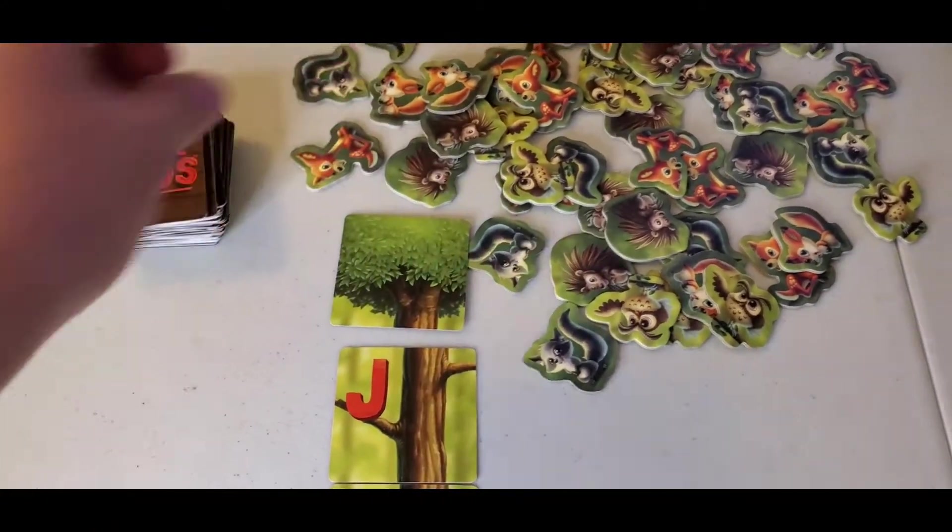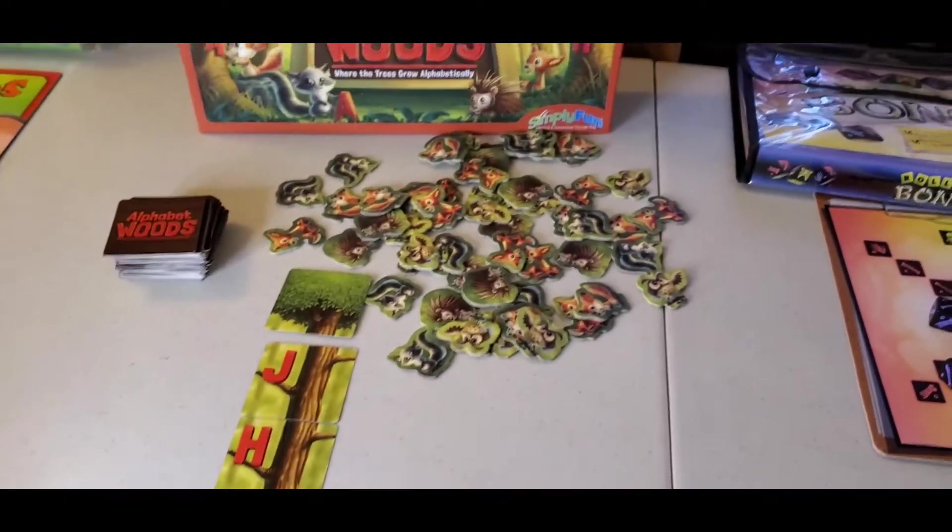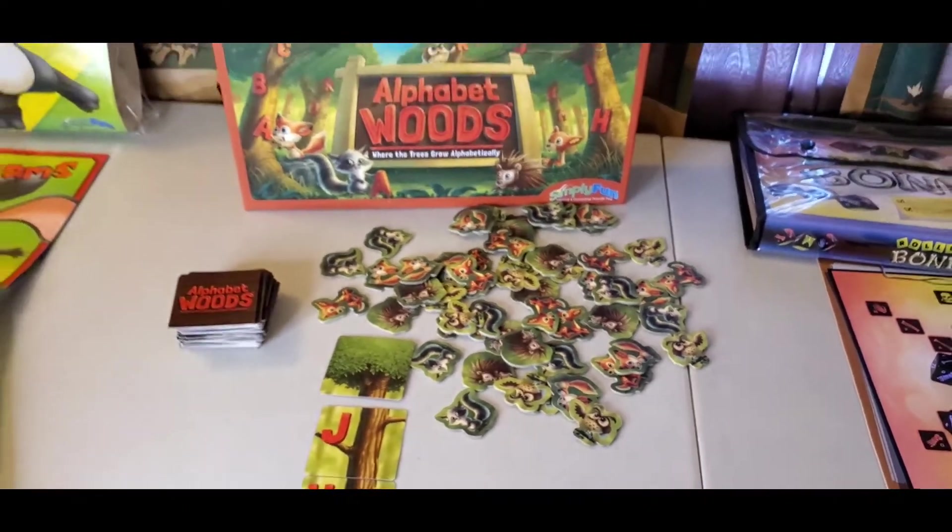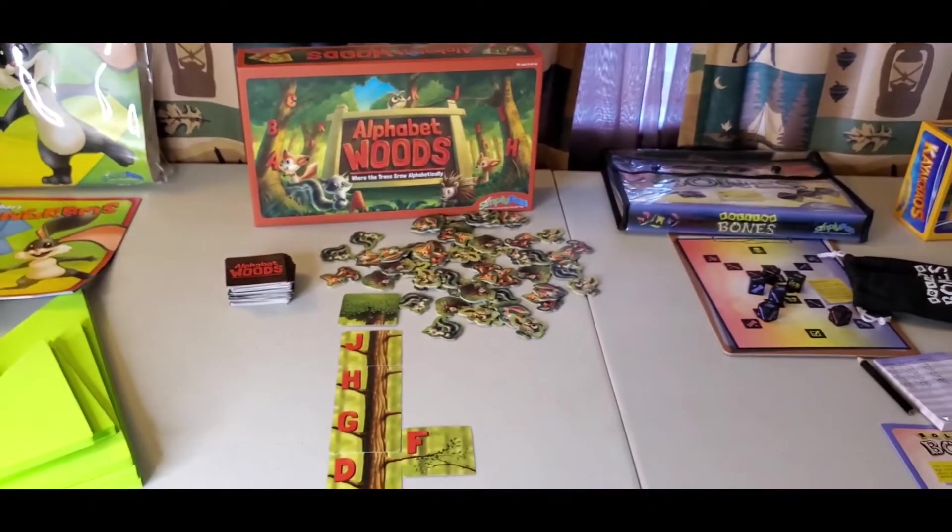You're going to build your trees until they're at least seven letters long, and then you can add a treetop on the top. And as you build trees, you're collecting animals. The person who has the most animals at the end of the game wins.